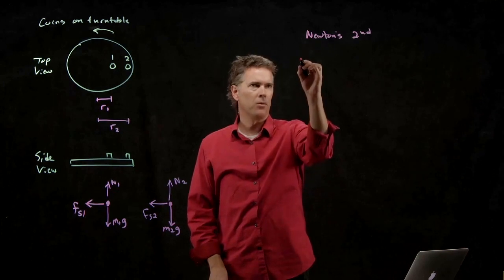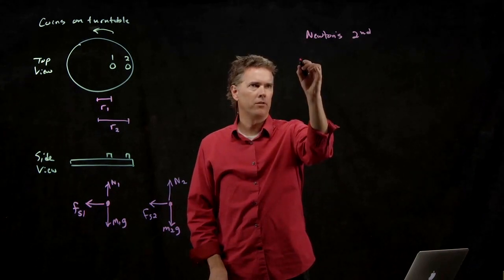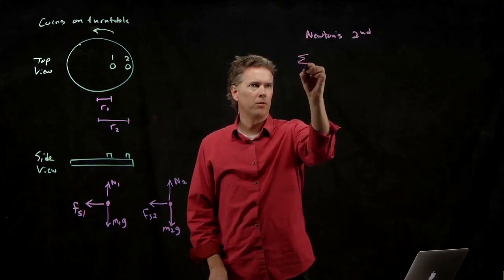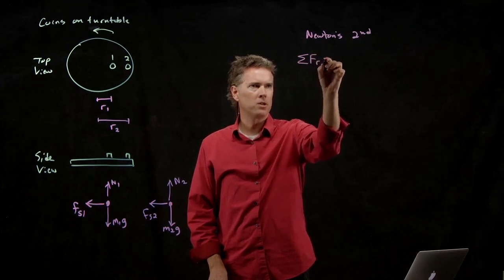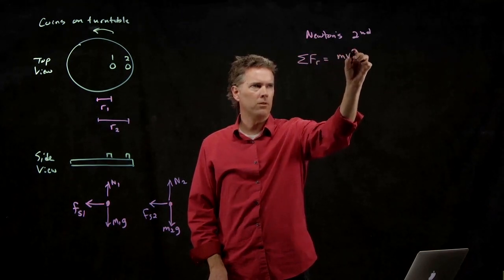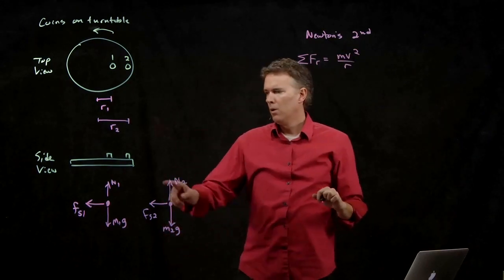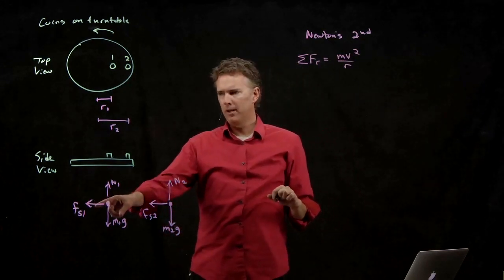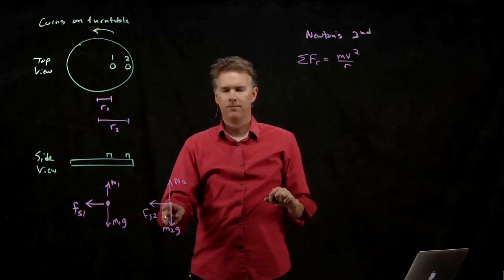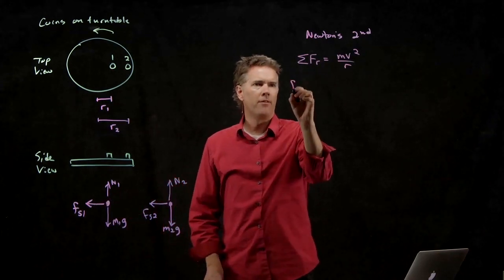So let's write down the radial components first. We have sum of the forces in the radial direction equals mv squared over r. We only have one force in the radial direction. It's F s1. So F s1 equals m1 v1 squared over r1.